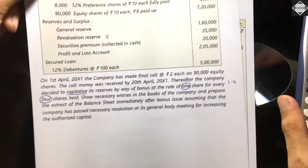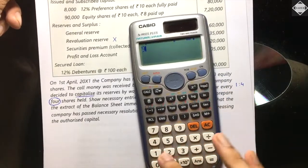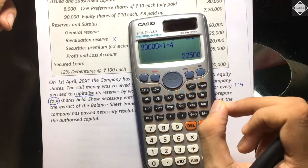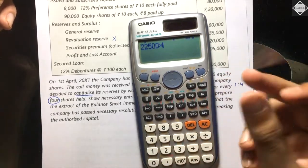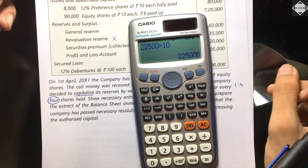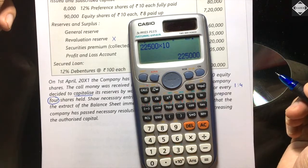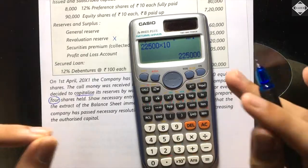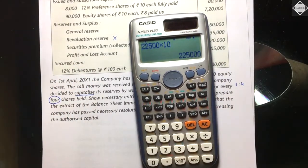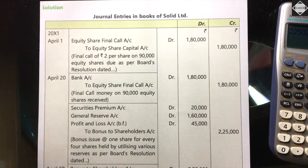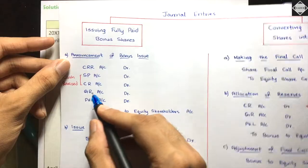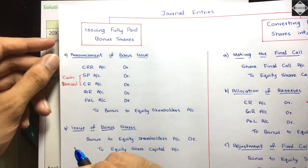The bonus amount: existing shares 90,000, ratio 1:4, so bonus shares = 90,000 × 1/4 = 22,500 shares. At face value ₹10 each, value of bonus = 22,500 × ₹10 = ₹2,25,000. The ultimate effect: decrease reserves by ₹2,25,000 and increase capital by ₹2,25,000. For first type bonus, you can use CRR, Securities Premium, Capital Reserve, General Reserve, free reserves like P&L — in that sequence.